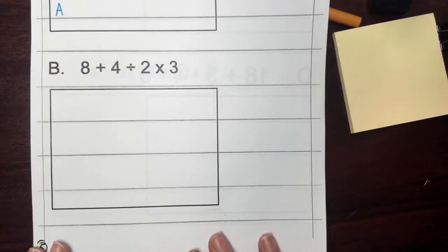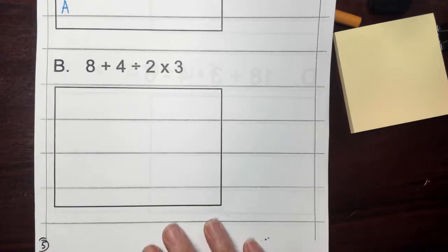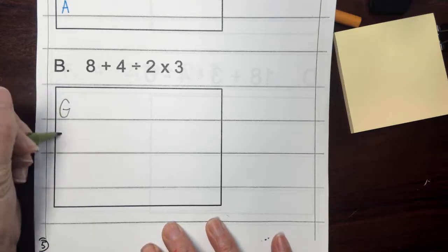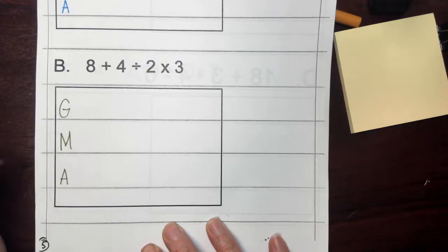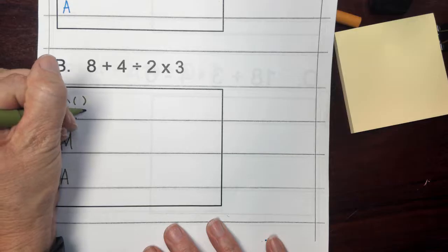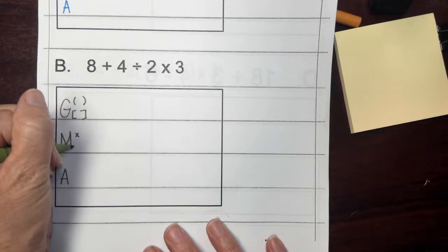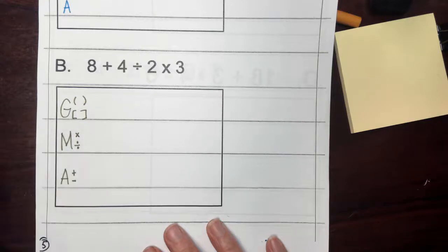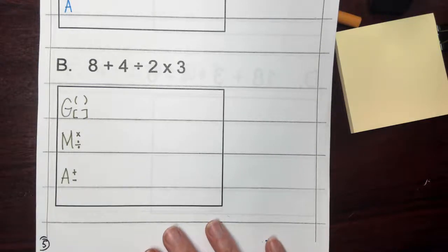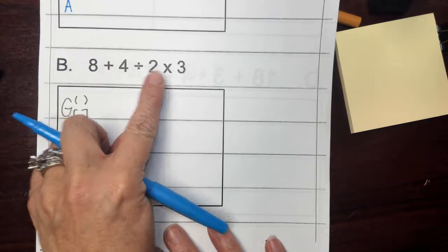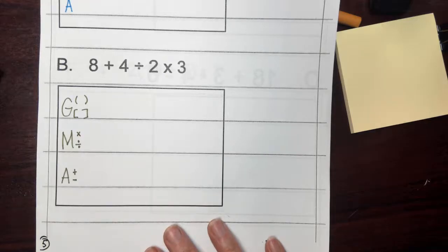So the first thing that I would hope that you would do is you would start with your steps, G, M, A, and you would be thinking about any grouping symbols or brackets, thinking about any multiplying or dividing actions, any adding or subtracting actions. And then I hope that you would think about how many actions are going to take place. How many rows will you have before you get your answer?